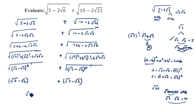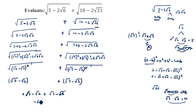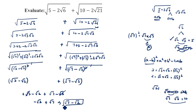So combining both terms, we write: (√3 - √2) + (√7 - √3). Since there is a plus sign between them, +√3 and -√3 cancel each other. We are left with -√2 + √7, which we write as √7 - √2. This is the final answer.